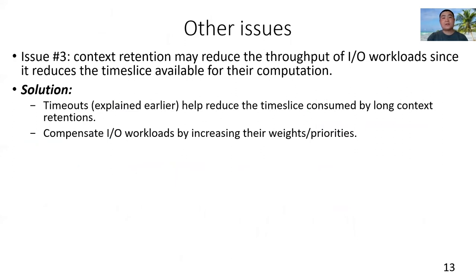The third issue is that context retention may reduce the throughput of IO workloads since it reduces the time available to other computations. The solution is in two aspects. First, timeouts explained earlier have reduced time slices consumed by long context retentions. Second, for relatively short context retentions, time slices of IO workloads are compensated by increasing their weights and priorities.